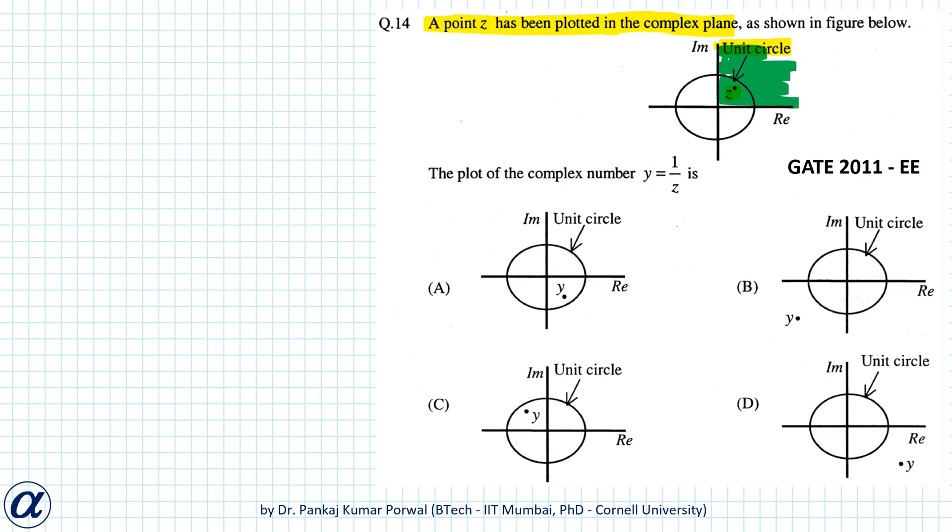Let's write z equals r e to the power i theta. If I plot this z in my complex plane—say this is the real axis, this is the imaginary axis, and this is our point z—then r will equal the modulus of z, that is the distance of z from the origin, and theta will be the argument of z, that is the angle made by this line with the real axis.